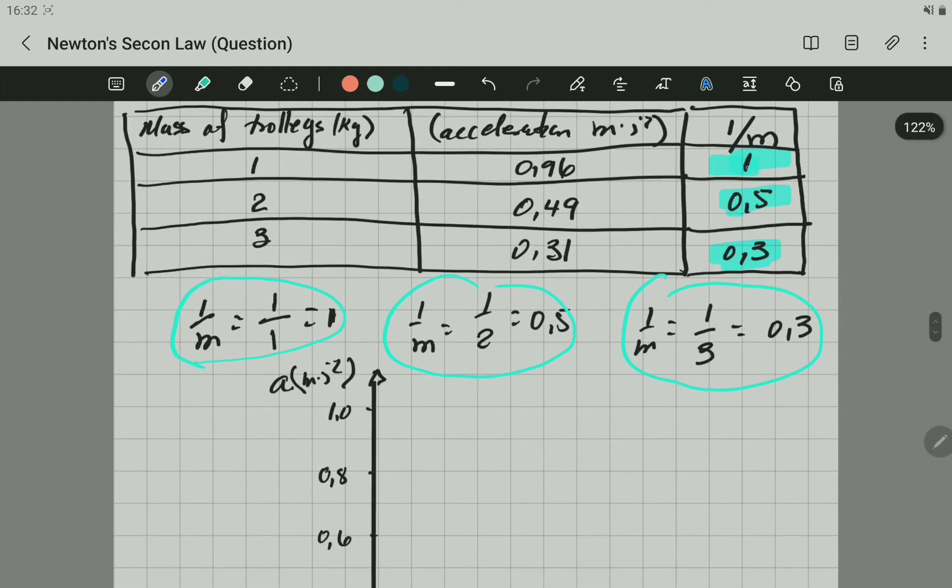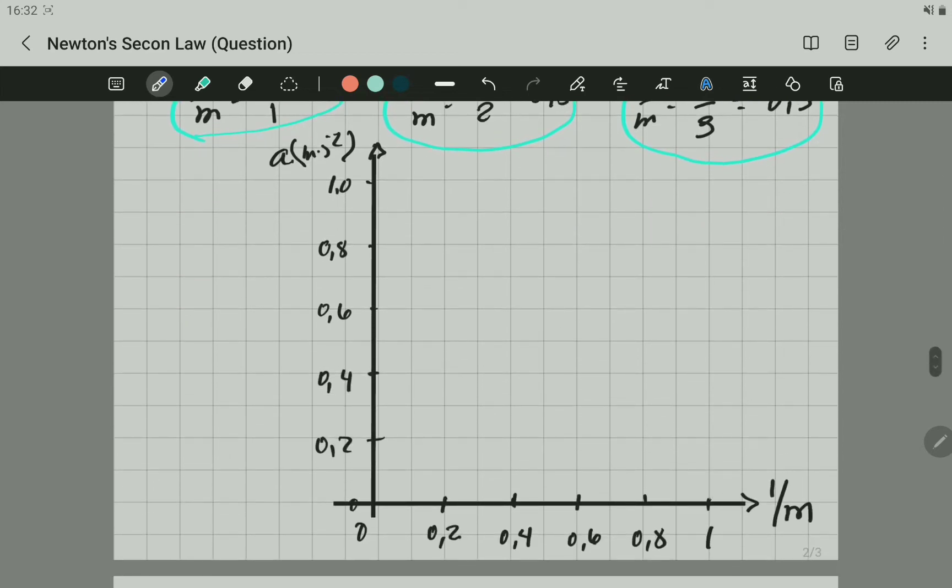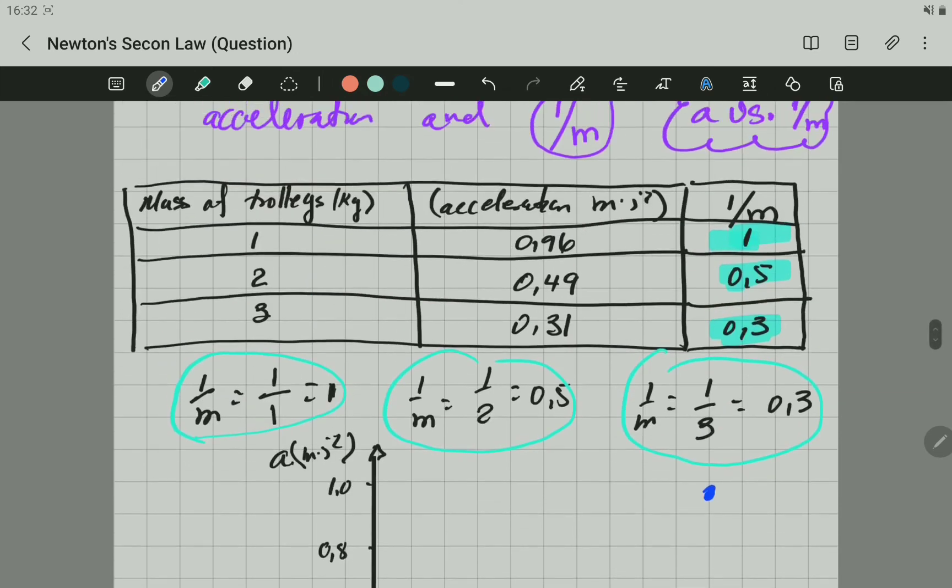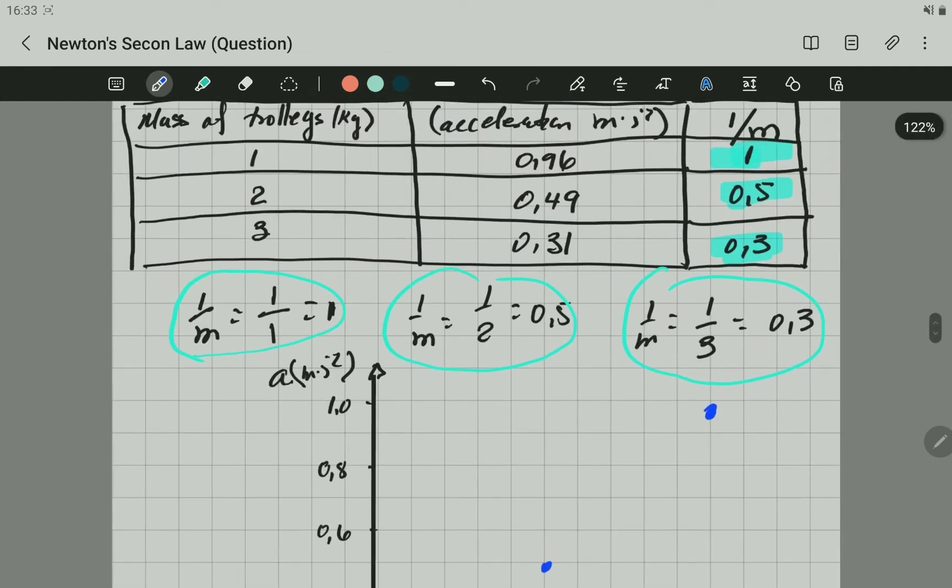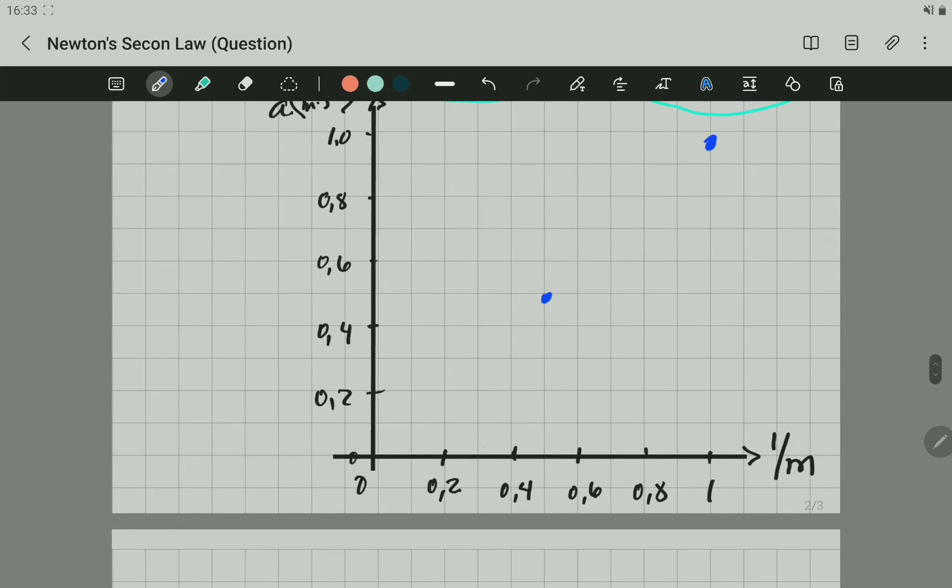So the first point here, we have for the x, 1, and for the y, 0.96. So 1 for the x is going to be here and 0.96 for the y. The second point we're going to plot is 0.5 for the x and 0.49 for the y. And the third point: 0.3 for the x. This one is 0.5. So that is the point.